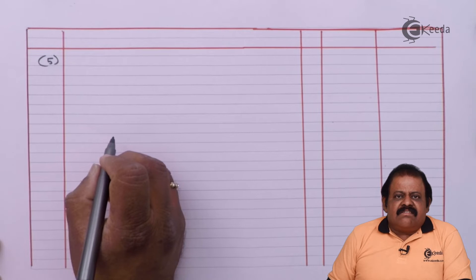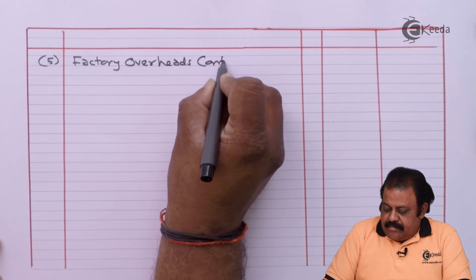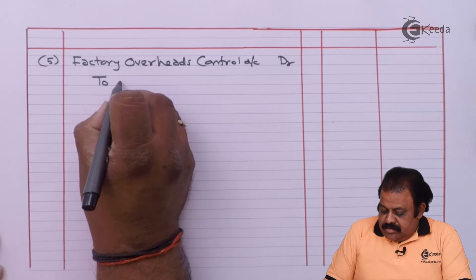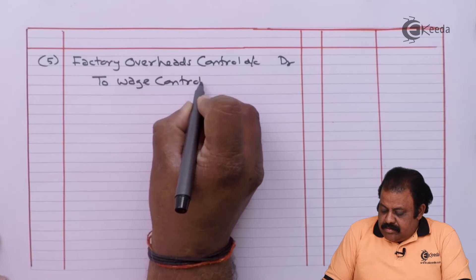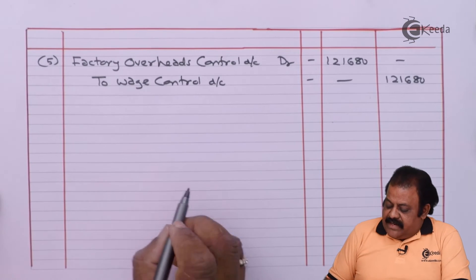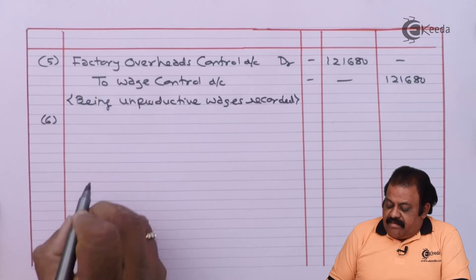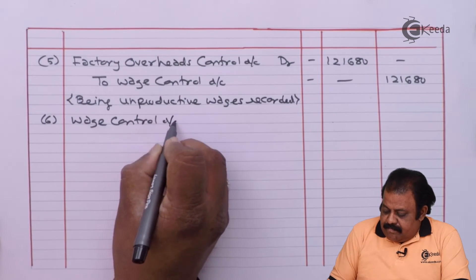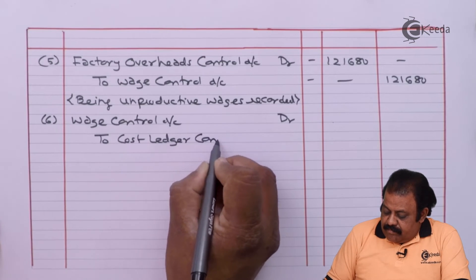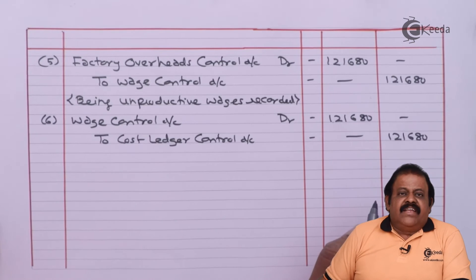Unproductive labor 1,21,680 — unproductive labor will be considered as factory overhead. Entry: Factory Overheads Control Account debit to Wages Control Account 1,21,680. Additionally, Wages Control Account debit to Cost Ledger Control Account 1,21,680, being unproductive wages recorded in cost ledger account.